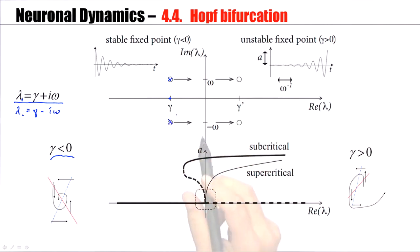If we increase our current, then the real part of this eigenvalue increases. The eigenvalues sit at gamma plus i omega and gamma minus i omega. If I increase the constant external current, the real part increases, which means the eigenvalues move in the complex plane. And at some point they pass zero. And suddenly, we have here a positive real part, gamma larger than zero.